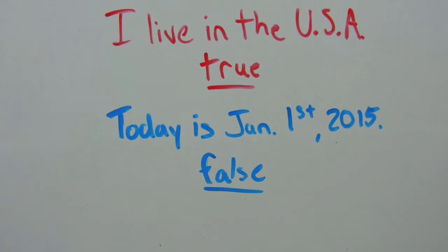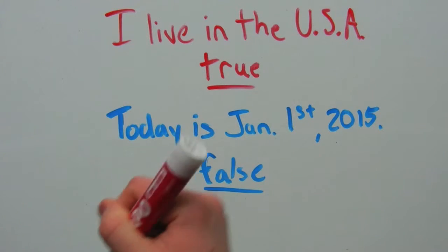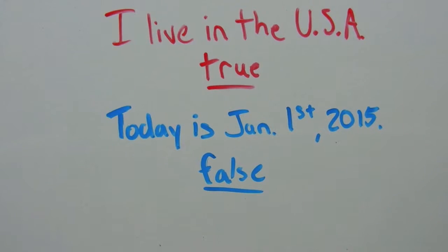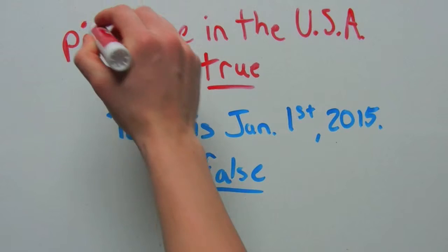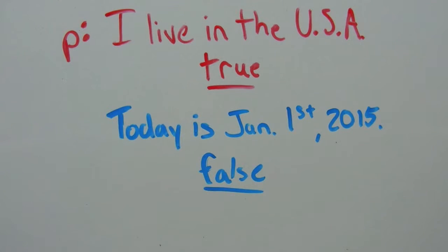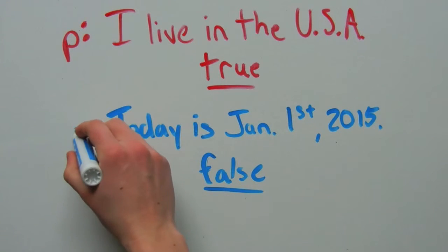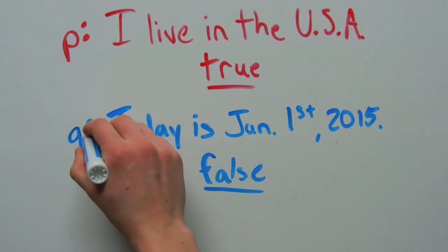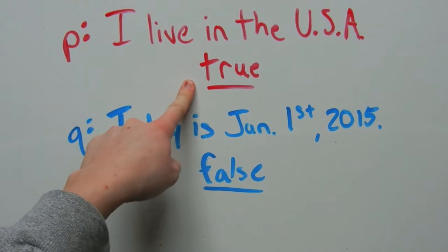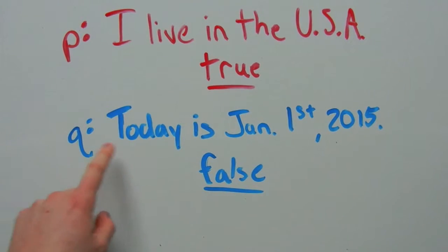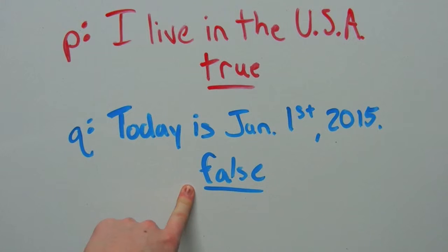We can use variables to represent a statement. The most common variables used are P and Q. So this first statement will be P and the second statement will be Q. The truth value of P is true and the truth value of Q is false.